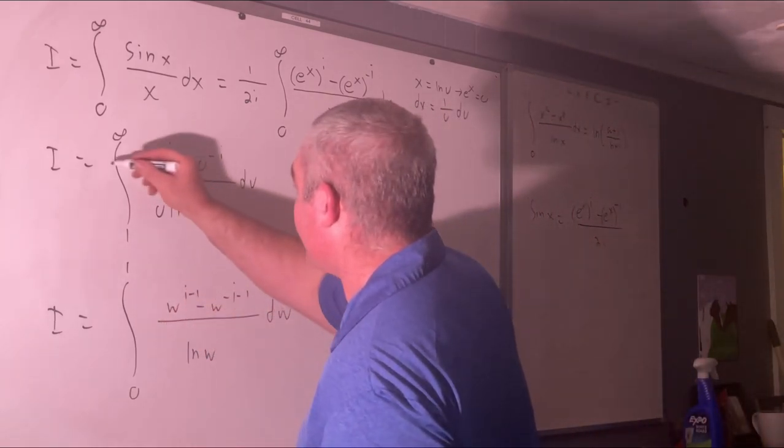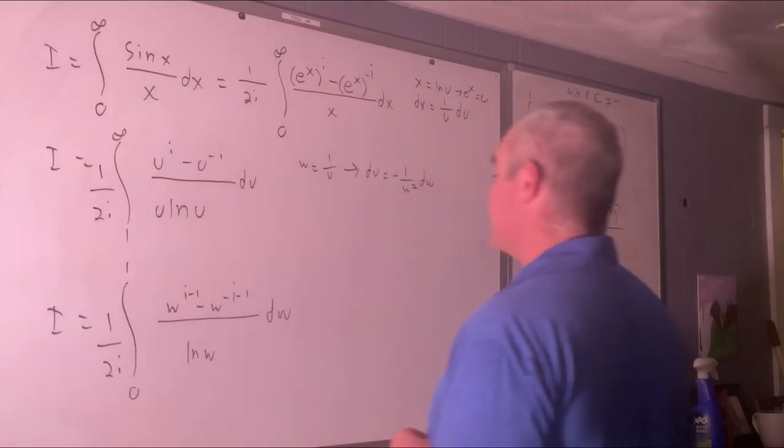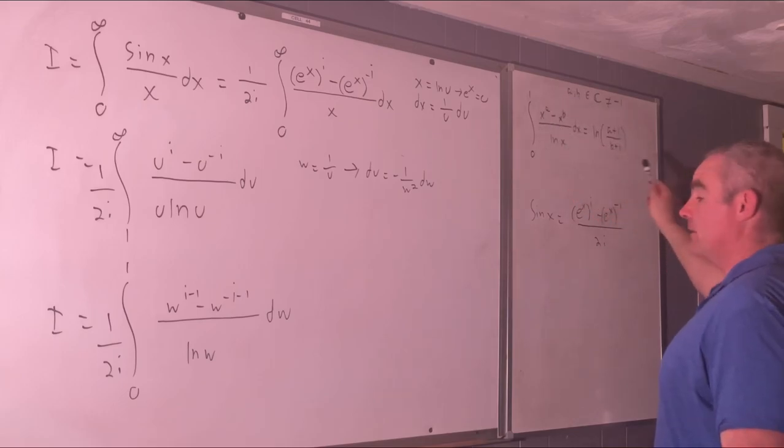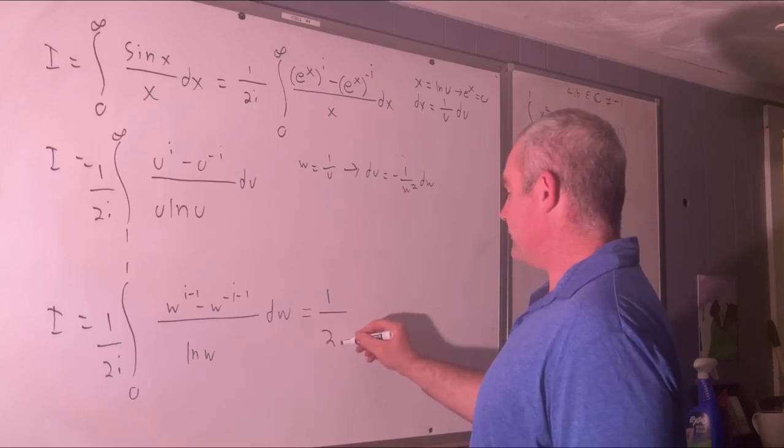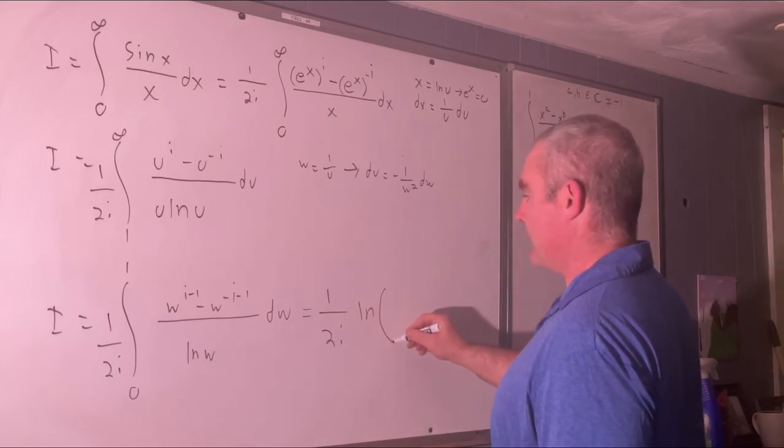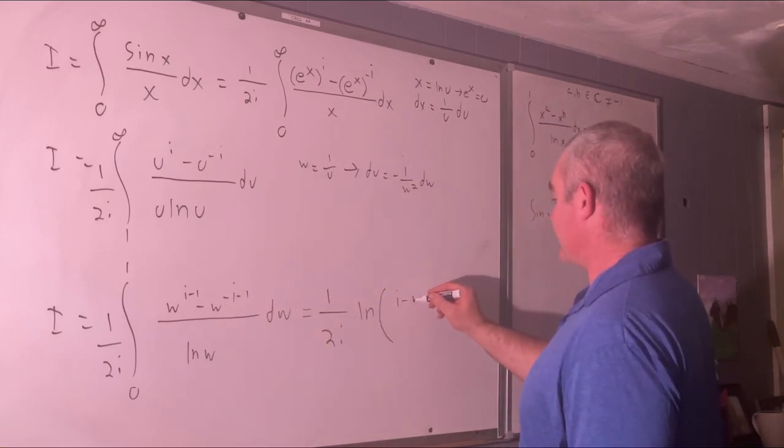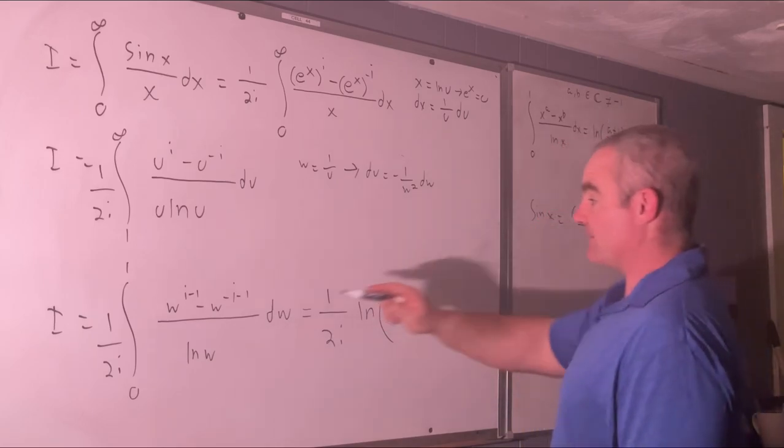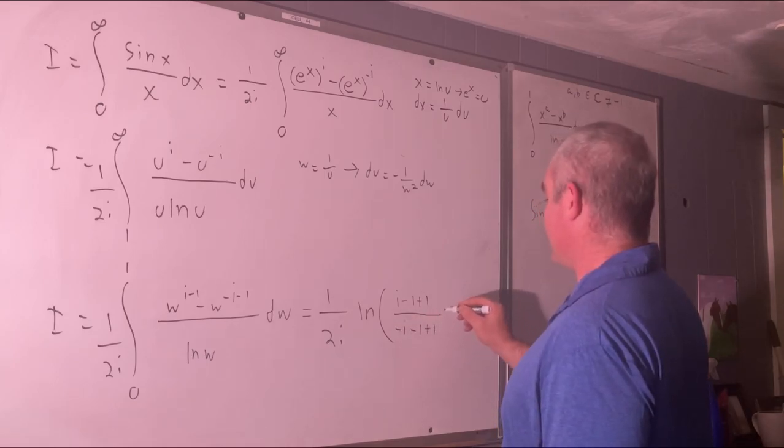Except for this is 1 over 2i and this is 1 over 2i. We can't forget that part. Alright. So now we have this form. So this is going to be equal to 1 over 2i times the natural log of our a in this case is i minus 1. So we get i minus 1 plus 1 over our b is minus i, so minus i minus 1 and then again plus 1 and that's it.